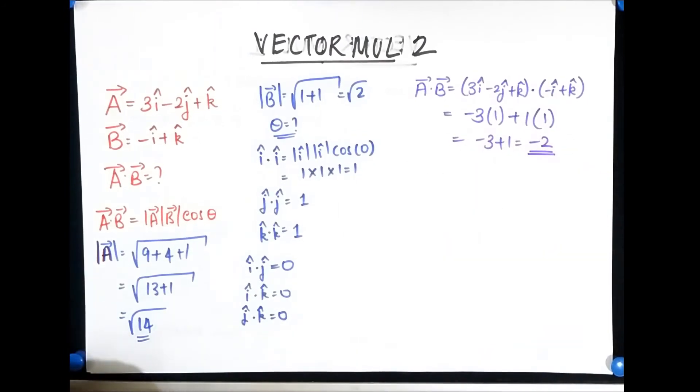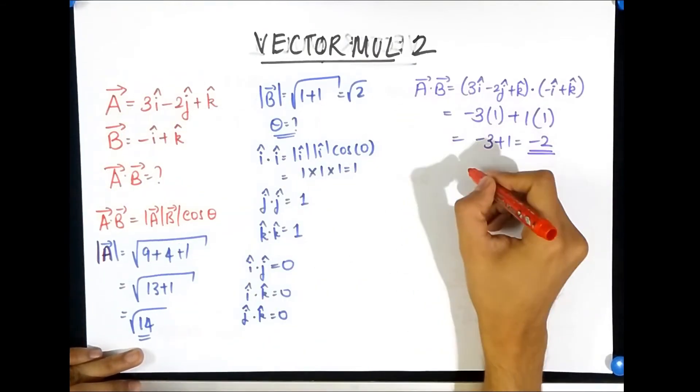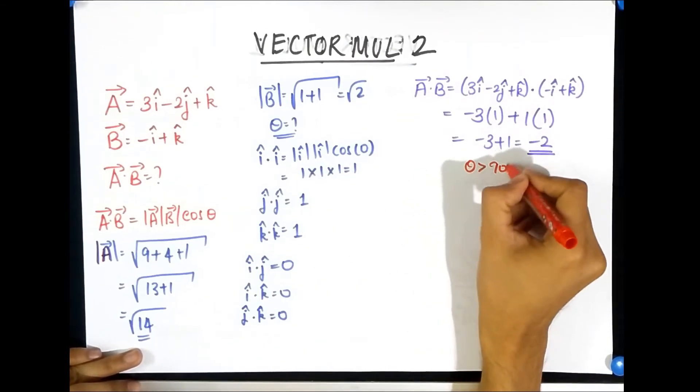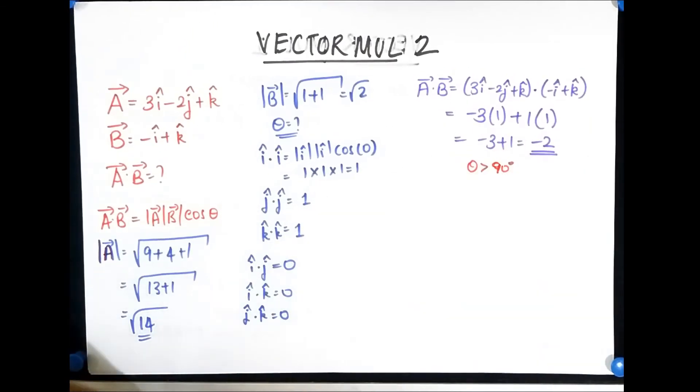Oh a negative sign, negative sign, this immediately tells me one thing, the angle between the two vectors is more than 90 degrees. I hope you remember this from the previous video, since it's negative, it's more than 90 degrees.